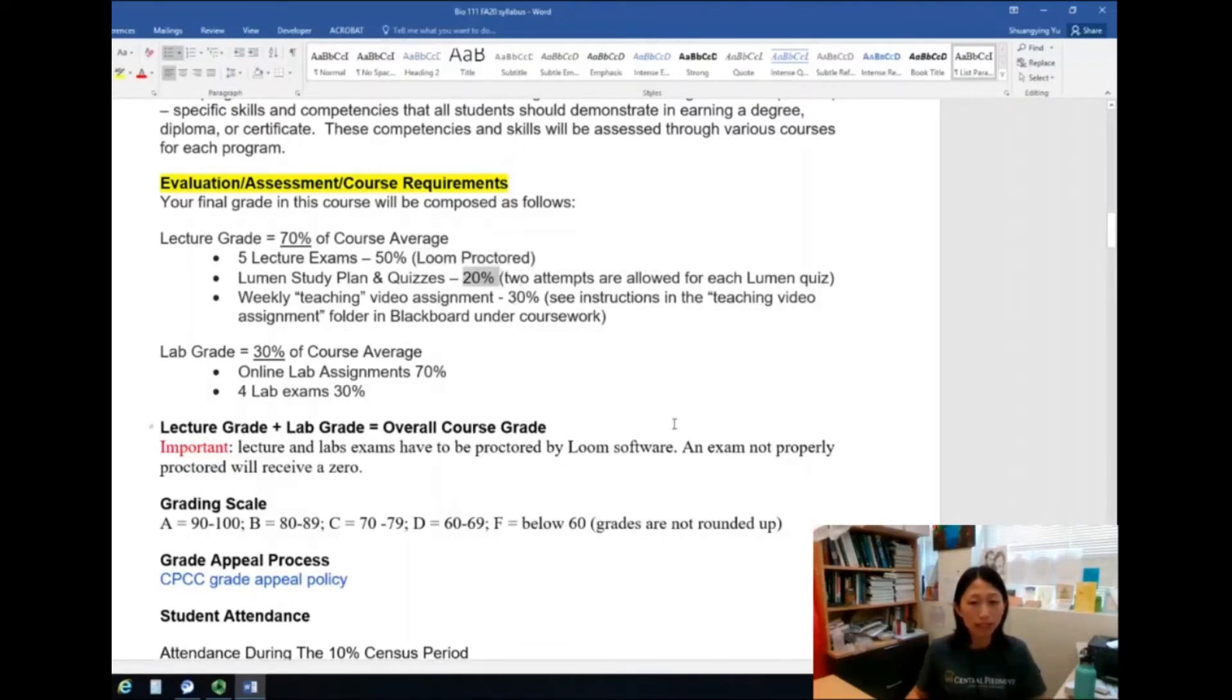20 percent comes from Lumen. And like I said, you need to do the study plan and quizzes. And for each quiz, you have two attempts. And guess what? I will take your higher score. So again, two attempts and your higher score will be recorded.